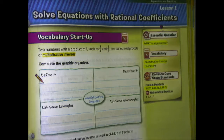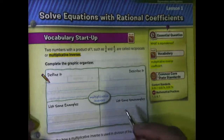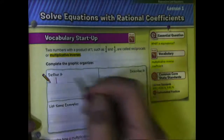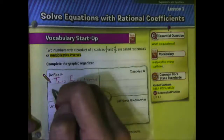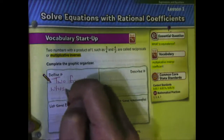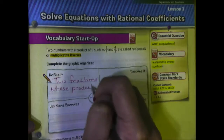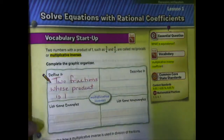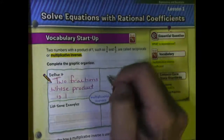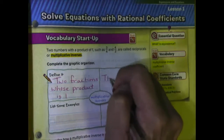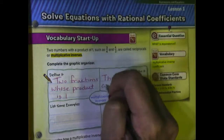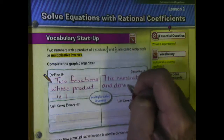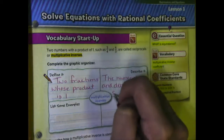Let's go through this graphic organizer about multiplicative inverses. To define it, the multiplicative inverse is two fractions whose product — meaning the answer to a multiplication problem — is 1. If we describe it, what we're actually doing is changing places: the numerator and denominator switch places.